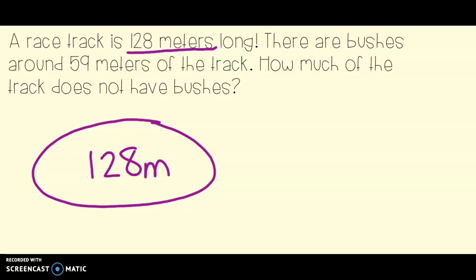Now, let's take a look and see what we know already. We know that the whole racetrack is 128 meters. That is our total. That's how long the whole thing is. So if I were to draw a racetrack, the whole thing around is 128 meters. Now, it also says there are bushes around 59 meters of the track. Now, 59 is smaller than 128, isn't it? So let's pretend that this amount here is 59 meters.